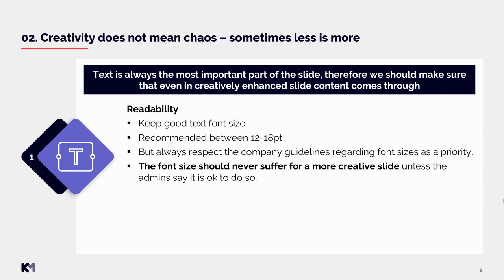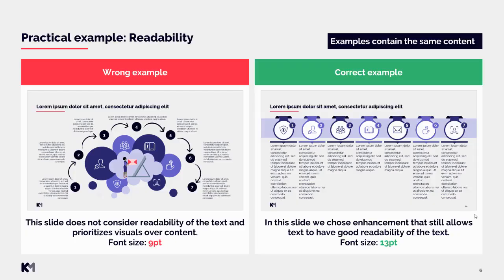Now we will look at a practical example regarding readability. On the left side we have a wrong example where the enhancement does not consider readability of the text and prioritizes visuals over content. The slide looks nice but the font size is only 9 points, which is very small for the majority of our clients. In the correct example we can see that we chose enhancements that still allow text to have good readability at 13 points, which is much better.